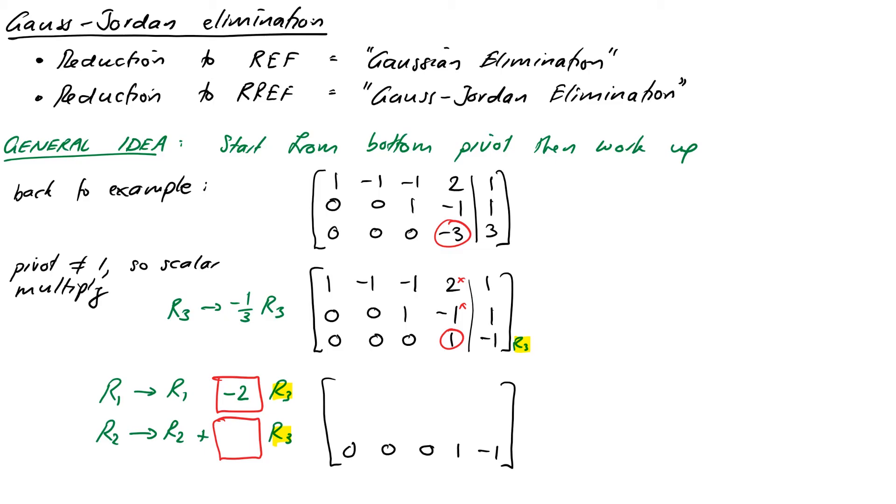Okay, so we'll do row 1 first. So in row 1, we have a 2, and we want it to be a 0. So that means we need to take away two copies of row 3 from row 1. So it's going to be a -2 in that box. Okay, so our new row 1 is therefore going to be 1, -1, -1. Nothing happens to those entries because they're all zeros in the row 3. Then we're going to take away two 1s from the 2, which gives us a 0. And then we're going to take away two -1s from the 1, which is the same as adding 2. So that becomes a 3.